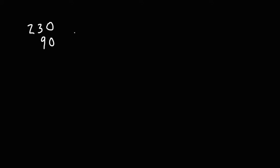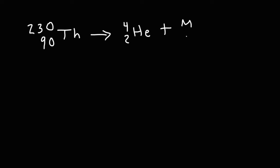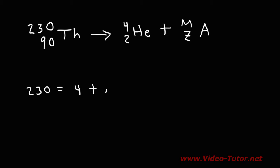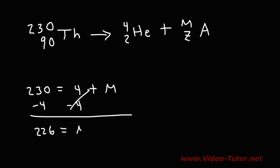Next we have thorium-230, and this element undergoes alpha decay. An alpha particle is basically a helium nucleus. Go ahead and identify the missing element. So we have 230 is equal to 4 plus M, looking at the numbers on top. Subtracting both sides by 4, the mass of the missing element is 226.